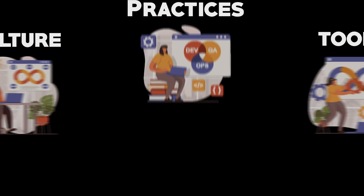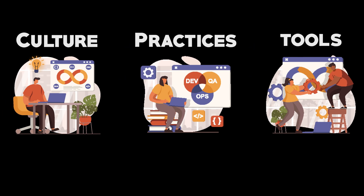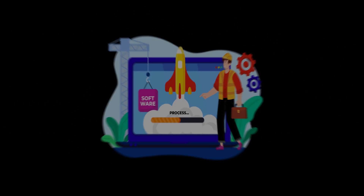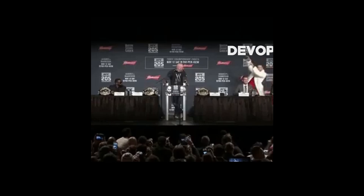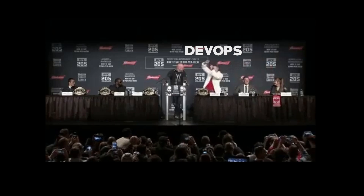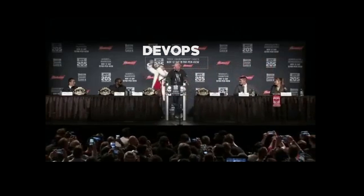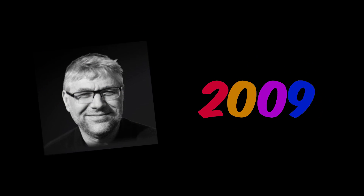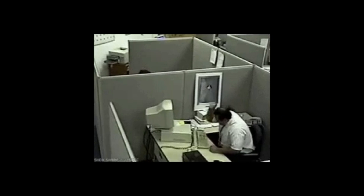DevOps is a combination of culture, practices, and tools to rapidly build and run software. DevOps first appeared around 2007 during an O'Reilly conference talk and was coined by the frustrated agile practitioner Patrick Debois in 2009, who was unsatisfied with how software was built back then.